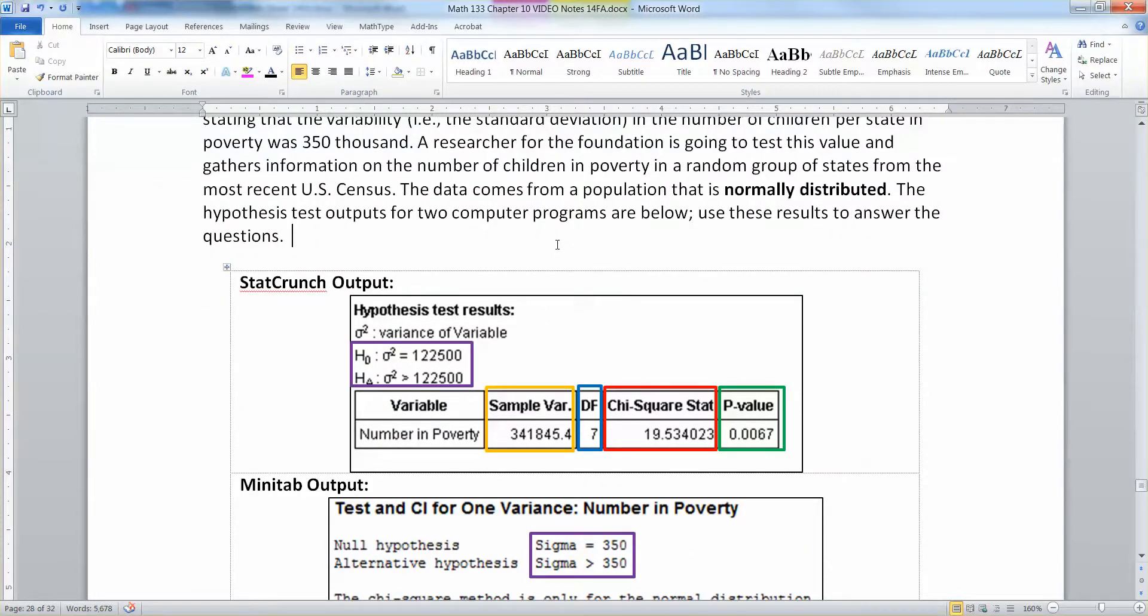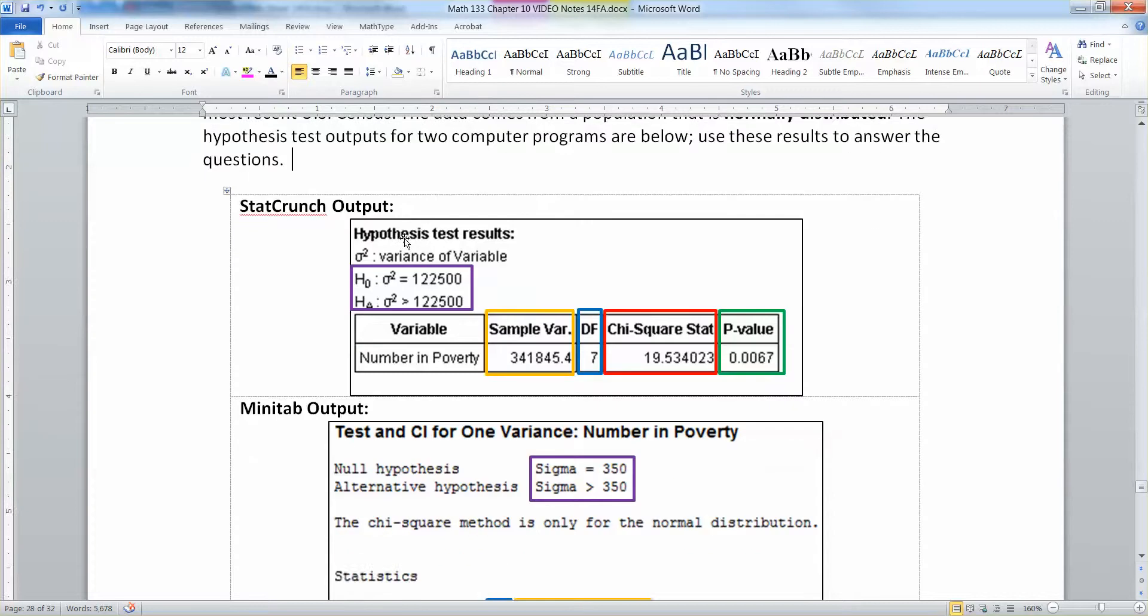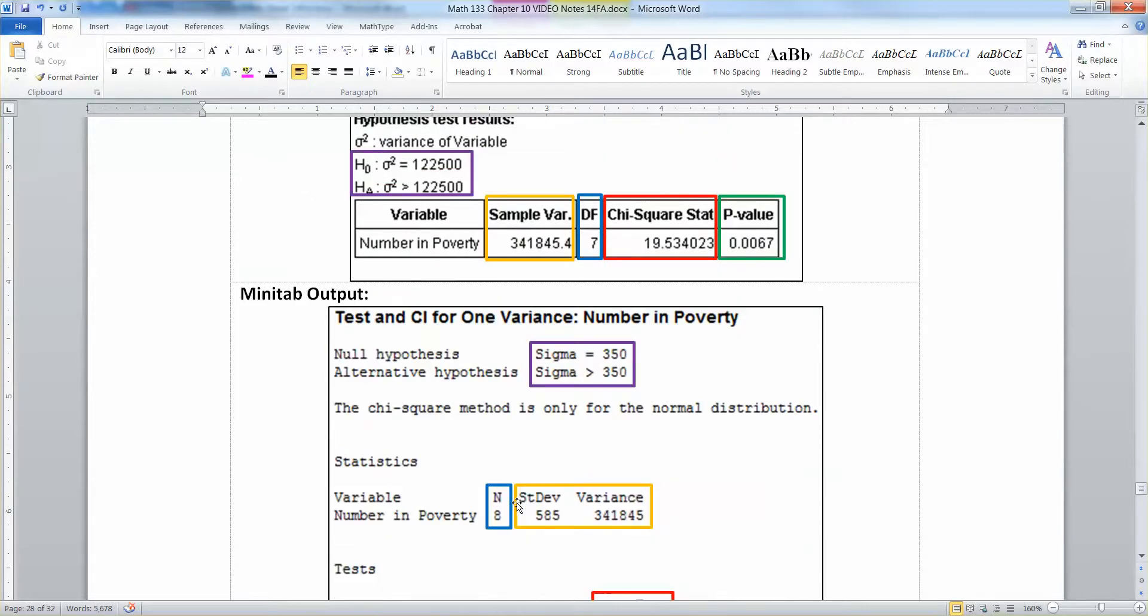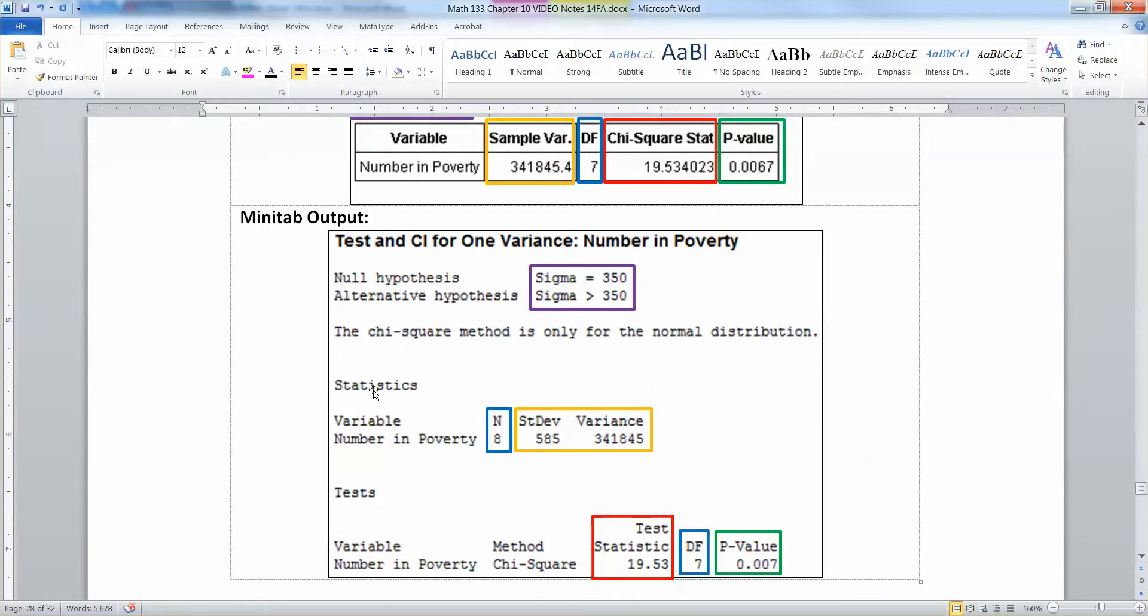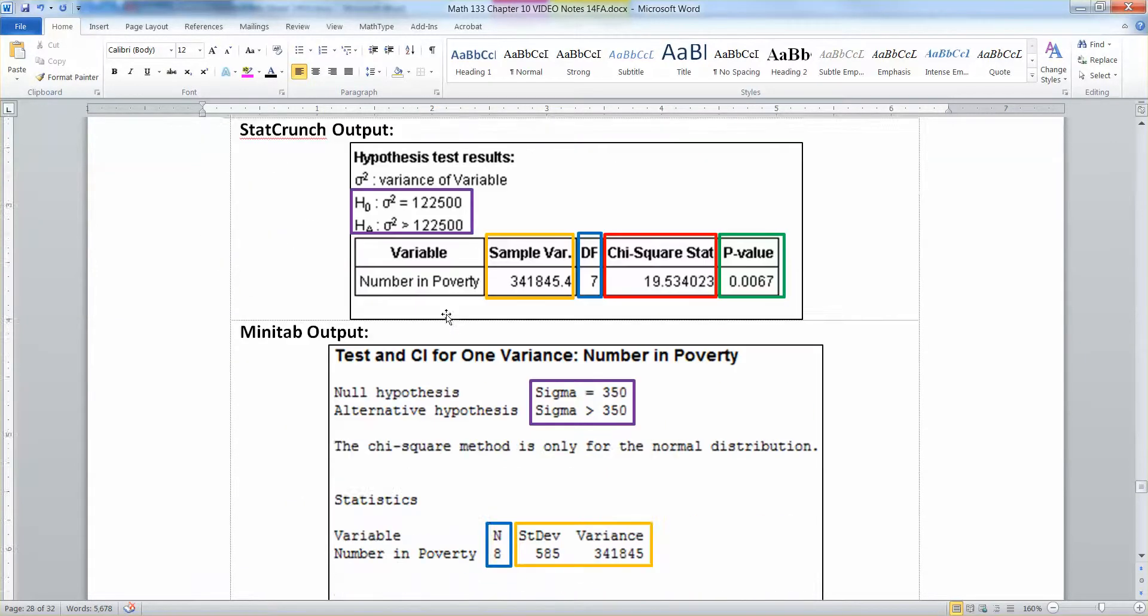Now normally I'd just give you one or the other because they're so similar, but this particular one is very different between these two programs, so I wanted you to see the difference. So StatCrunch looks like this, more or less, and then Minitab is a little bit more elaborate and it's harder to read. Minitab is also giving us a lot more information. Minitab gives us these statistics in the middle that StatCrunch doesn't bother with.